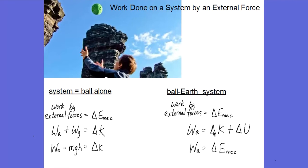Now that we have a more complicated system — the ball and the earth together — we have more categories of energy: kinetic energy, the energy of motion, and also potential energy. The work done by the external force equals the change in the mechanical energy of the system, where for the more complicated system, mechanical energy is comprised of both kinetic and potential energy.